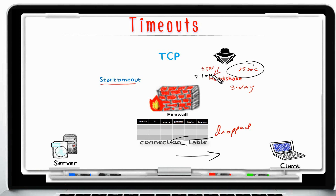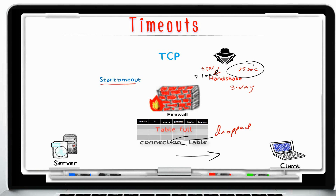A SYN flood attack is where an attacker sends a SYN packet but does not send the final ACK to complete the three-way handshake. An incomplete handshake uses up memory resources, and multiple such attacks can quickly fill up the connection state tables. At minimum, this exhausts processing resources and can prevent legitimate connections from getting established — or in a worst case, cause memory failures that crash, hang, or reboot the system. If the final ACK is not received within 25 seconds, the connection is deleted from the connection table, preventing the table from getting full.